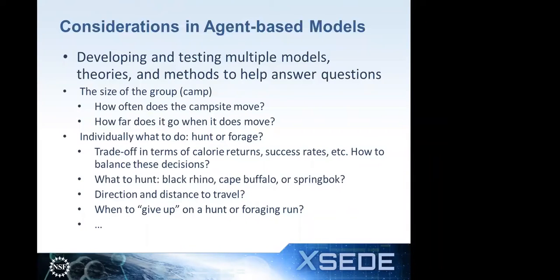There are a lot of considerations in these agent-based models. The formal models Curtis was talking about can help us understand what these groups do. In the agent-based models, we have the idea of a camp — a group of individuals — and questions regarding how often they move, how far they go, and individual decisions: should I go hunting today or forage for food? Of course there are tradeoffs in terms of calorie returns, success rates, whether you're getting carbohydrates or proteins, and what to hunt. These are some of the aspects that formal agent-based models allow us to explore, and we're just beginning on this path.